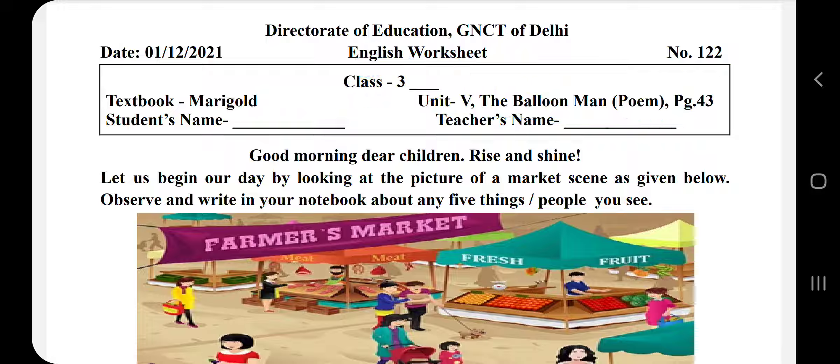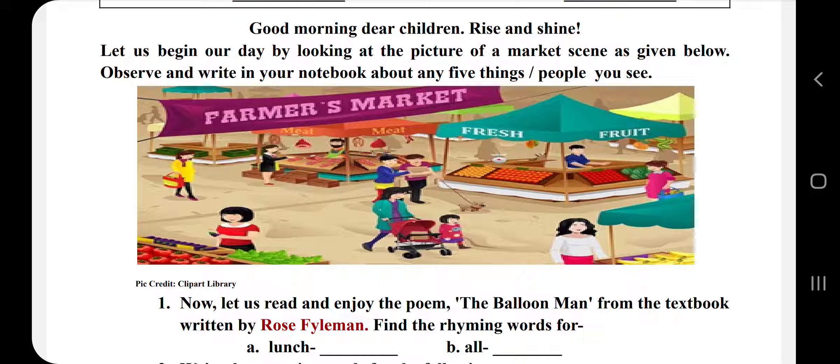Let us start our day by looking at the pictures of a market scene as given below. Now we are going to look at the pictures of a market scene, which is the picture. Observe and write in your notebook about any 5 things or people you see.